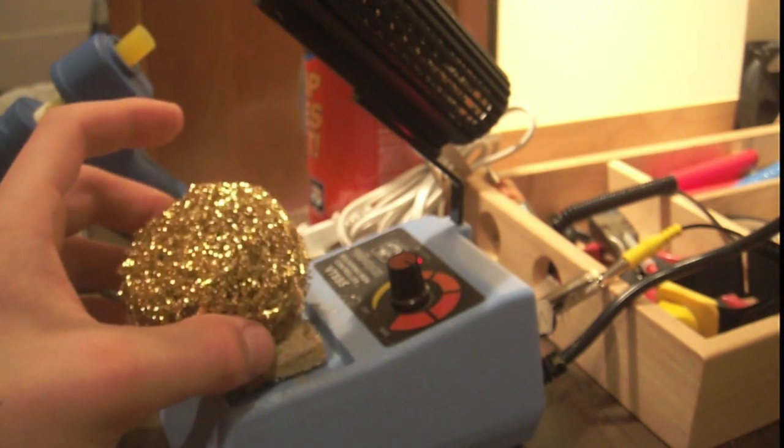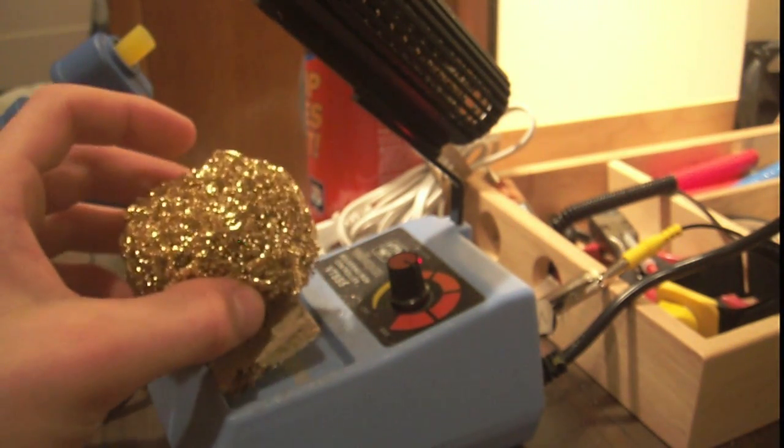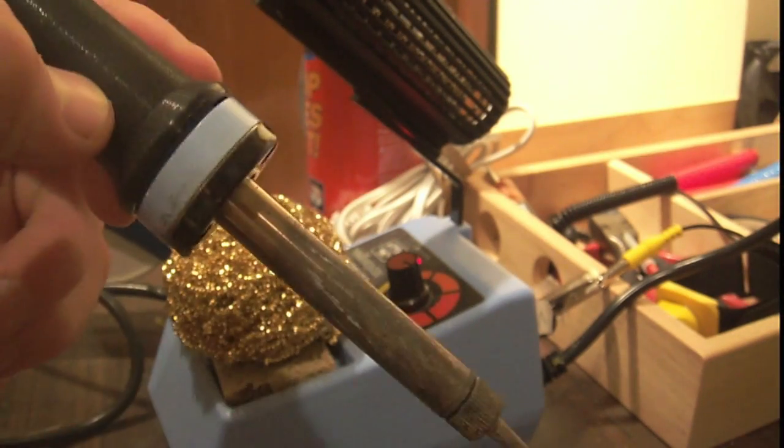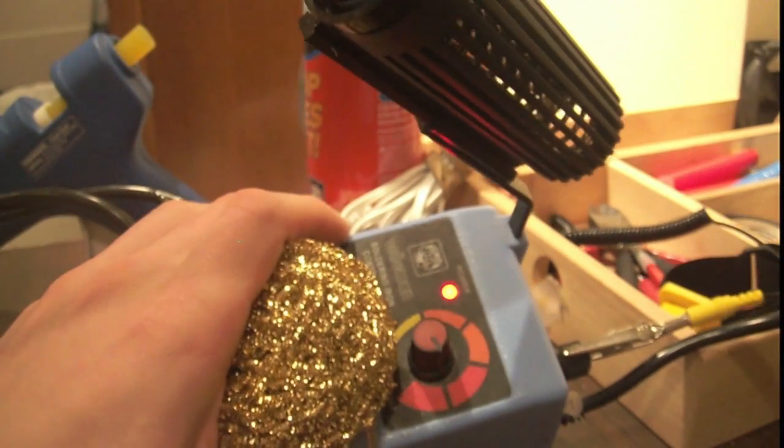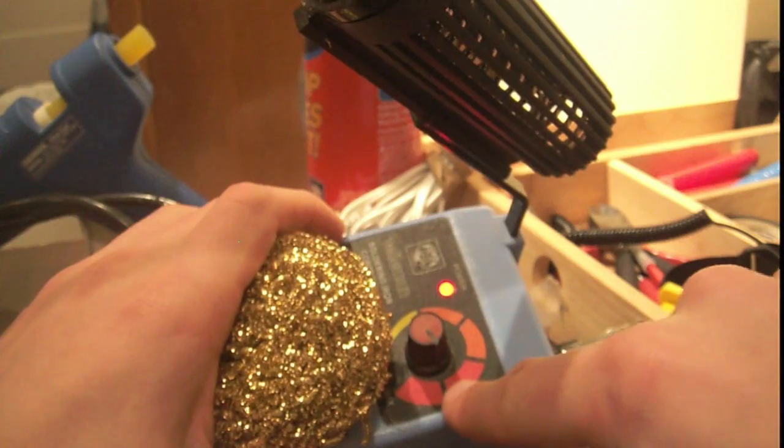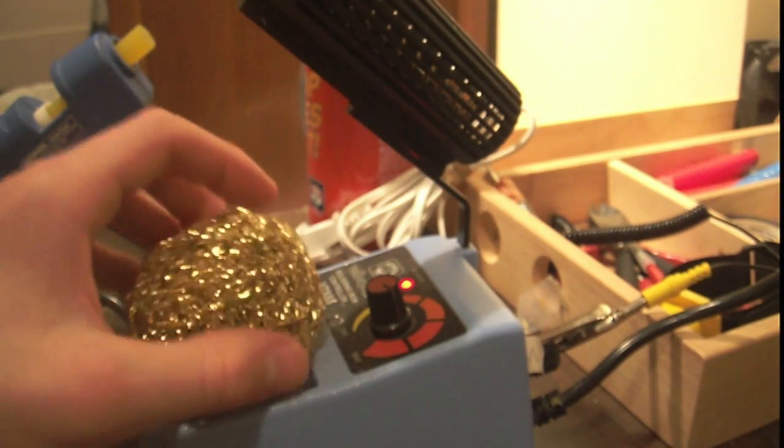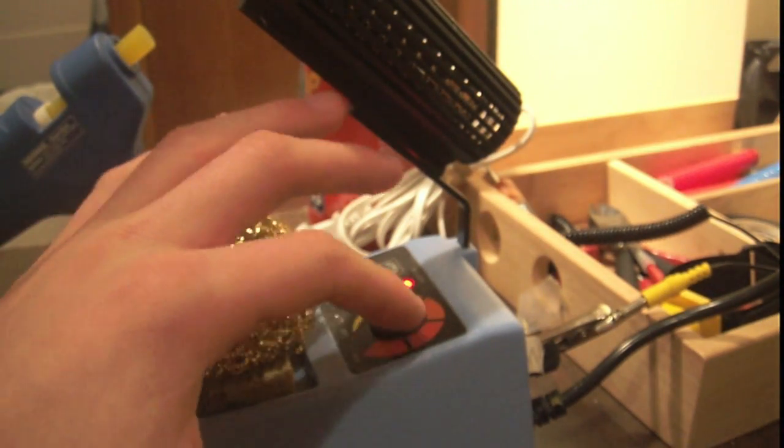Now, to clean your soldering iron, you either need a brass sponge like on the top or a regular sponge on the bottom. With a brass sponge, you just stab the sponge with the iron, and with a regular sponge, you just swipe it across, and this will remove all the gunk from it.